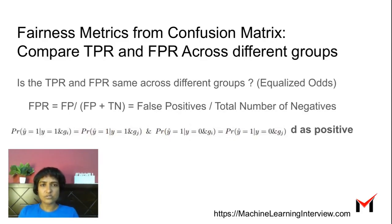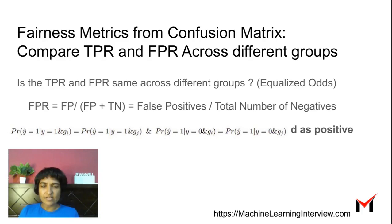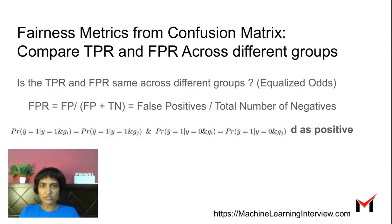Another technique that is used is equalized odds, which compares the false positive rate in addition to the true positive rate. The false positive rate is the number of false positives divided by the total number of negatives. Intuitively, out of all the examples that are negative, how many were misclassified as positive? Is this ratio the same for both sensitive groups — the male and the female? If this is the same, in addition to the true positive rate being the same, that would give us a notion of fairness.